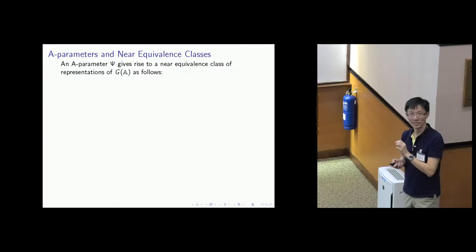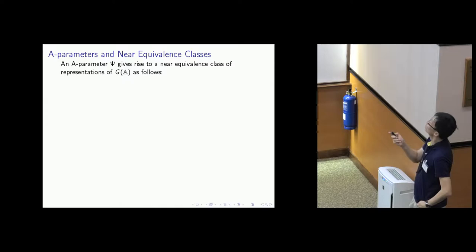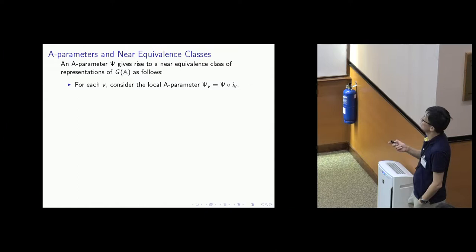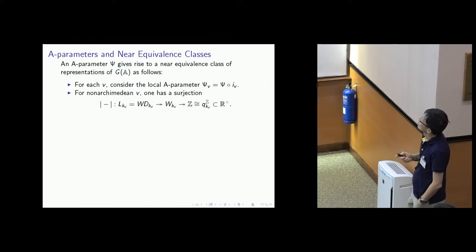And that's the goal. In the end, I want to produce, for almost all V, an unramified representation pi_V of G(K_V). The only ingredient I have to give you this data is just a global A parameter. So let's start. We are given a global A parameter, but as explained in the previous slide, for every V we get a local one, by decomposing with this inclusion from the local Weil-Deligne group to L_K.